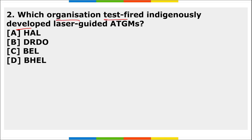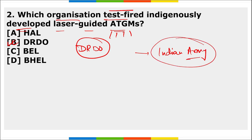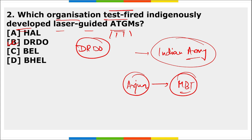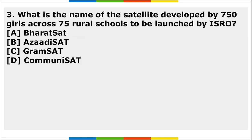Which organization test-fired an indigenously developed laser-guided anti-tank guided missile (ATGM)? It was DRDO that developed and test-fired this laser-guided anti-tank guided missile, which was then delivered to the Indian Army. It was launched using the Arjun tank - India's main battle tank - and was tested in Maharashtra.